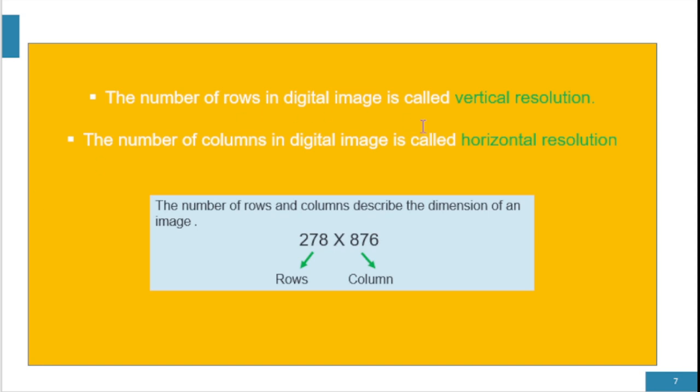Here we have some important terms: vertical resolution and horizontal resolution. The number of rows in a digital image is called vertical resolution and the number of columns in a digital image is called horizontal resolution. The number of rows and columns describe the dimension of an image.